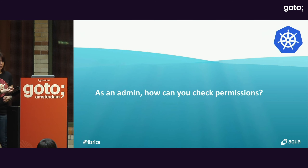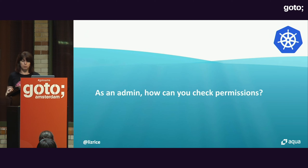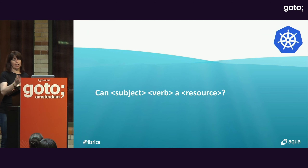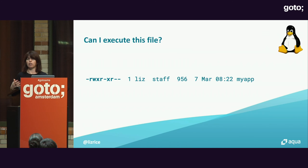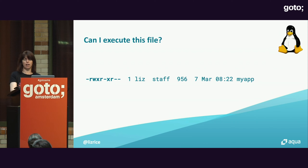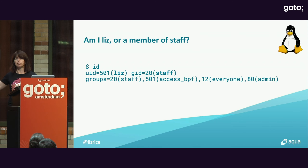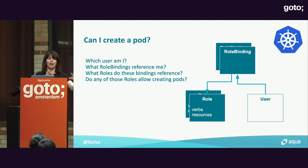The point is to emphasize that you want your service accounts to have least privileges — only let software access the API if it needs it, and most application code does not need the ability to manipulate the Kubernetes API. As an administrator, how can you know whether your service accounts, users, or groups have been given too widely scoped permissions? In Linux, you can very easily check by looking at the attributes of the file to find out whether a user can execute it.